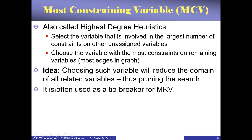This is often used as a tiebreaker in case of MRV. For example, when we start the Australian problem, all the variables initially can take three possible colors. We cannot apply minimum remaining value at that time because they are all equal. So one possible thing to do is go for this heuristic — it will give us a tiebreaker and tell us which variable to choose among those equal ones.